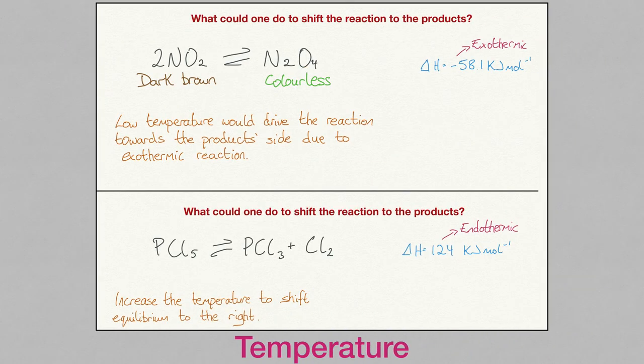Temperature affects chemical equilibrium. Chemists need to know if the reaction is exothermic or endothermic. If a reaction is exothermic and chemists want to ensure equilibrium lies closer to the product side, i.e. more product, then they need to decrease the temperature, as a low temperature favours the exothermic reaction. If the reaction is endothermic, then increasing the temperature ensures the equilibrium lies closer to the product side, as a high temperature favours the endothermic reaction.